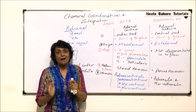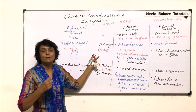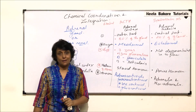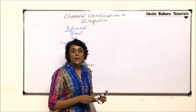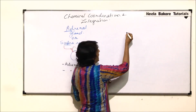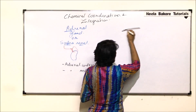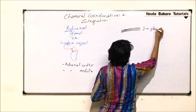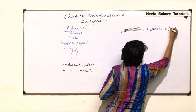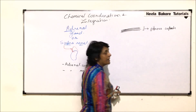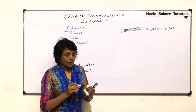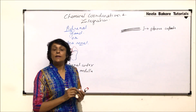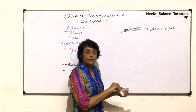Now let us draw the section of the adrenal gland to understand which hormone is secreted by which part. The outermost part is covered by a fibrous capsule, which is protective in nature — it is made up of fibers. The next and major part is the adrenal cortex, which has three zones.